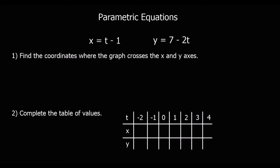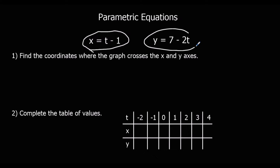In a Cartesian equation we just have one equation linking x and y. In a parametric equation we have a separate equation for x and a separate equation for y, linked by a third variable called a parameter. So here we've got an equation for x: x equals t minus 1, and an equation for y: y equals 7 minus 2t.